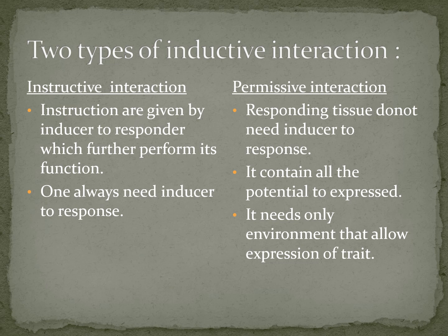There are two types of inductive interaction. First is instructive interaction and second is permissive interaction. In instructive interaction, instructions are given by the inducer to the responder — it instructs other cells to respond, and it always needs the inducer to make the response happen. In permissive interaction, the responding tissue does not need the inducer to respond; it contains all the potential to express and only needs an environment that allows expression.